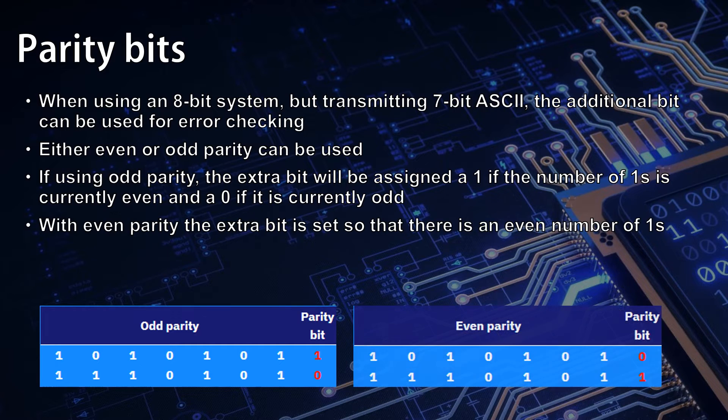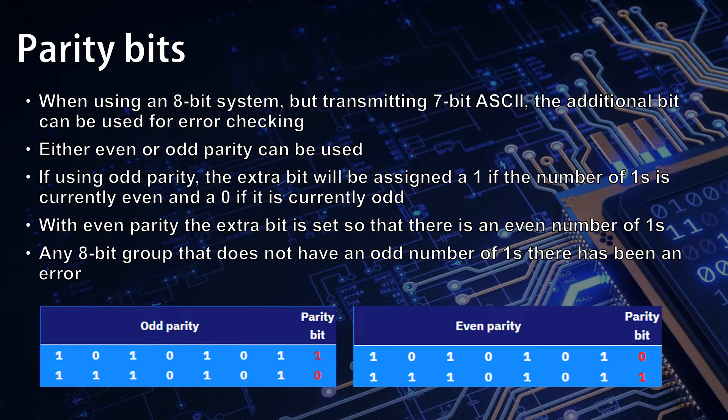If we're using even parity, it's going to be the opposite of that, and the final bit will be assigned a 0 if it's already an even number of 1's, and a 1 if it's currently an odd number of 1's. Any byte, therefore, that does not have the correct parity has an error and needs to be retransmitted.